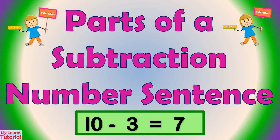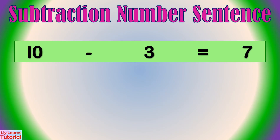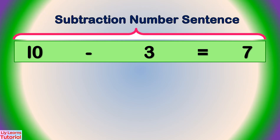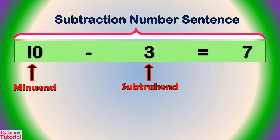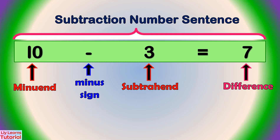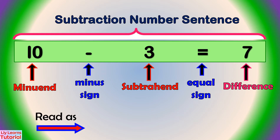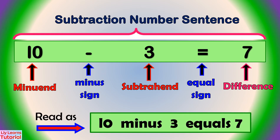Let's look at the parts of a subtraction number sentence. This is a subtraction number sentence: 10 is the minuend, 3 is the subtrahend, 7 is the difference. This is a minus sign and this is an equal sign. We can read this as 10 minus 3 equals 7.